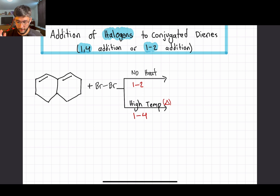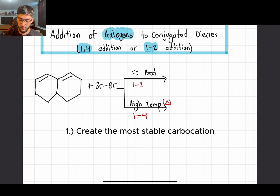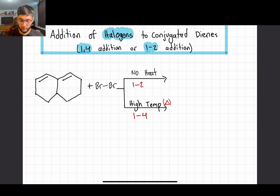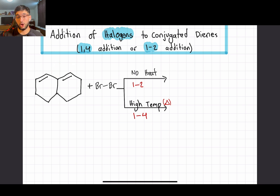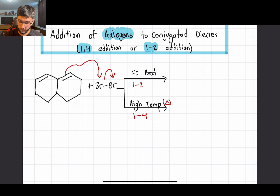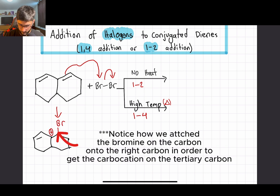The first step in this reaction — and this stays true no matter what type of problem or molecule we're using — is to create the most stable carbocation. We want to see which double bond could attack the bromine to give us the most stable carbocation, and we do this by looking at the types of carbons those double bonds have. This double bond has two secondary carbons, while the other has a tertiary and a secondary, so the carbocation will be most stable on that tertiary carbon. That double bond is going to attack the bromine, pushing off a Br⁻ into solution.